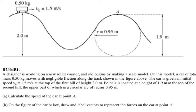This is a 2004 AP Physics B exam question. A designer is working on a roller coaster with a mass of 0.5 kg that moves without friction and starts at the first hill that is 2 meters above the ground.